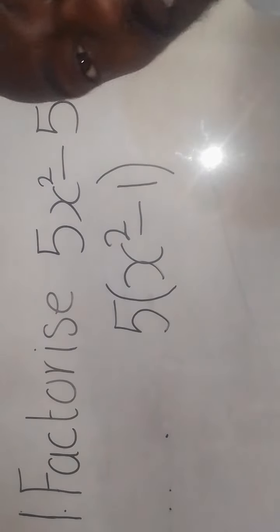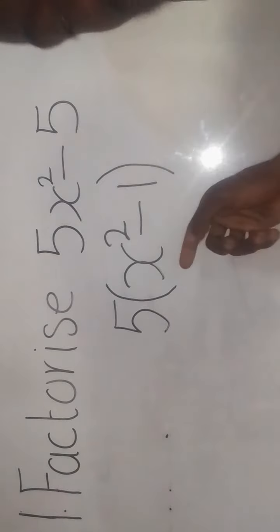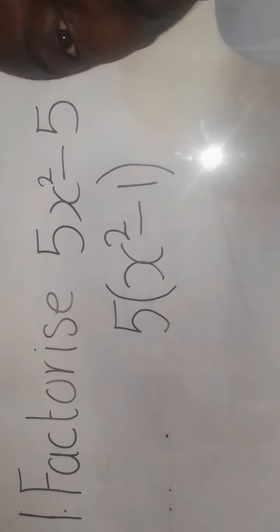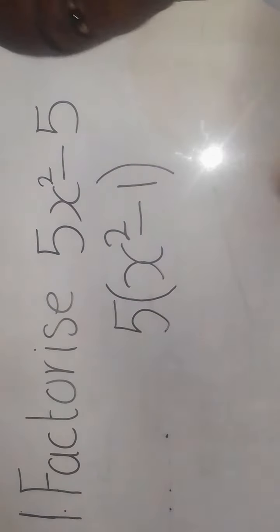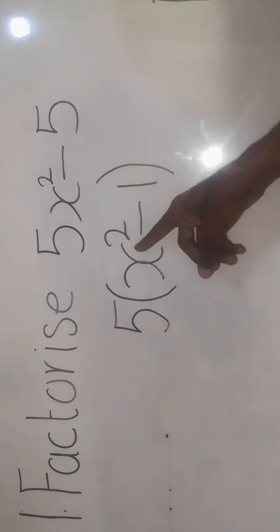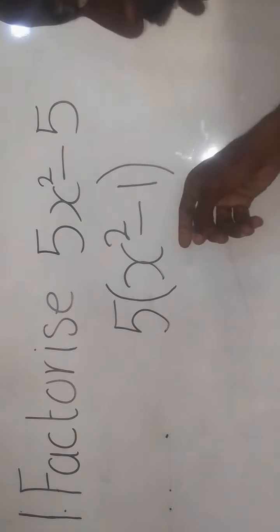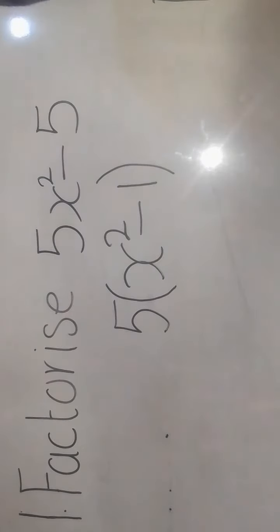Now the other part is, you need to check what is inside here. This part which is inside is known as the difference of two squares. Why so? Because we can find the square root of x squared and the square root of 1. So this part is known as the difference of two squares.